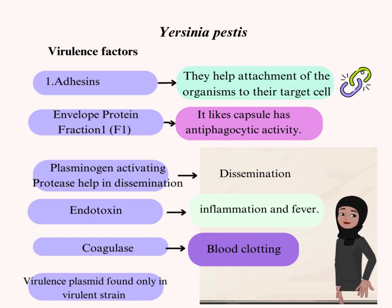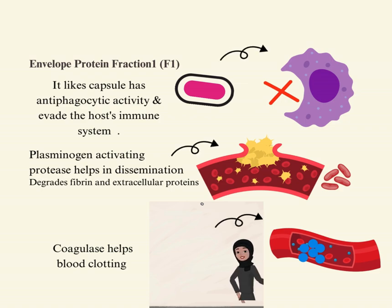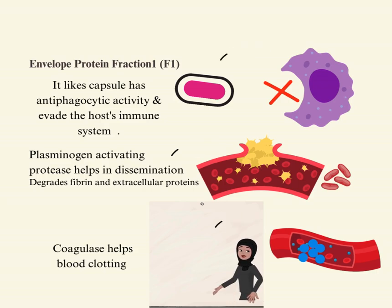Coagulase. Plasminogen activating protease. Envelope protein fraction 1 acts like a capsule and has antiphagocytic activity. Coagulase leads to blood clotting. Plasminogen activating protease helps in dissemination and degrades fibrin and extracellular proteins.